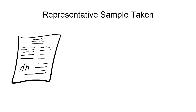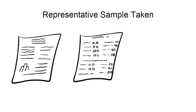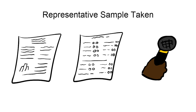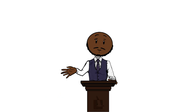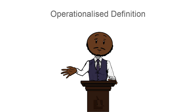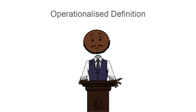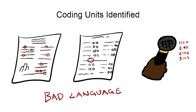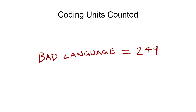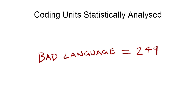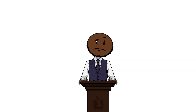Let's look at the process. First, a representative sample of qualitative data is collected from printed material, other media, or an interview. The researcher then identifies coding units to analyze the data, such as use of bad language, but each unit must first be given an operationalized definition — so what constitutes bad language. The qualitative data is then analyzed to see how many times each coding unit appears, followed by statistical analysis.